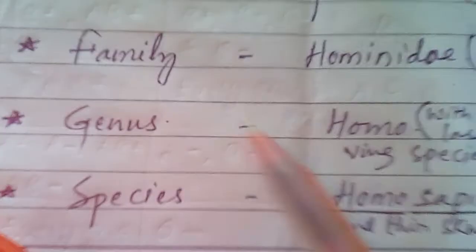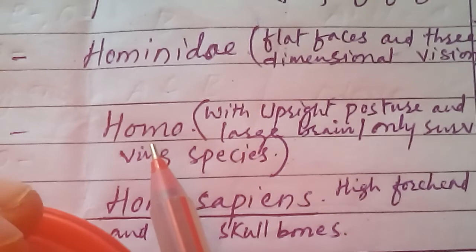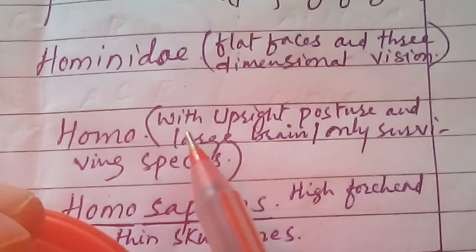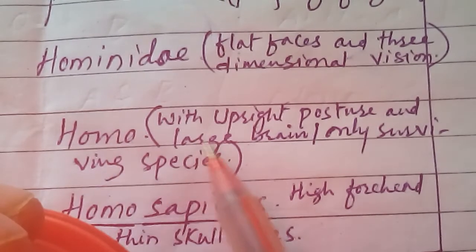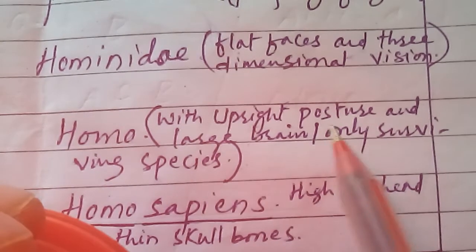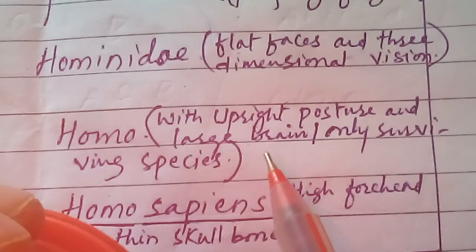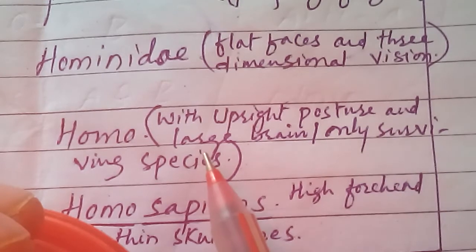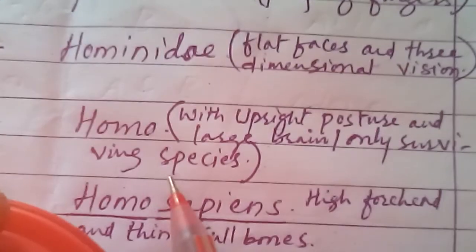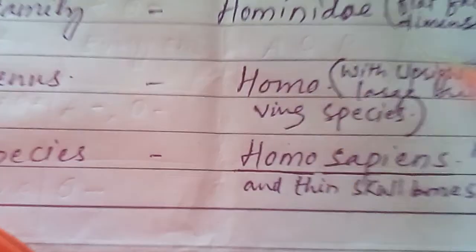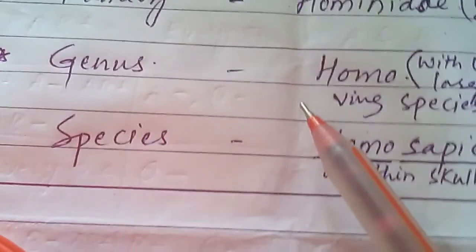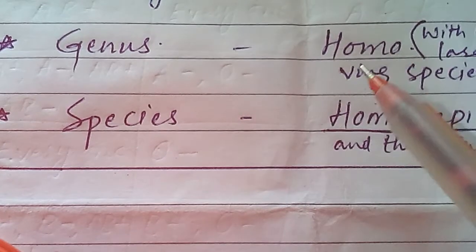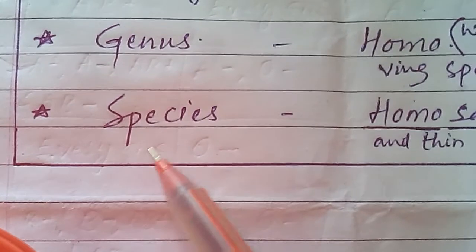Then comes the genus. The genus of the human being is Homo — H, O, M, O. Organisms belonging to this genus are characterized by upright posture and a large brain. Humans are the only surviving species of the genus Homo in the world. This is the special characteristic of Homo living organisms.